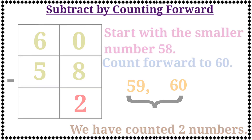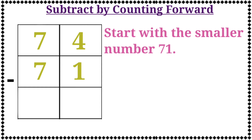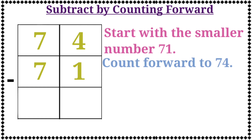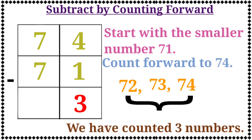The next example is 74 minus 71. First, we will start with the smaller number 71, and count forward to 74. Let's count: 72, 73, 74. Now we have counted 3 numbers. Therefore, the answer is 74 minus 71 is equal to 3. Let's write the number 3 in the box.